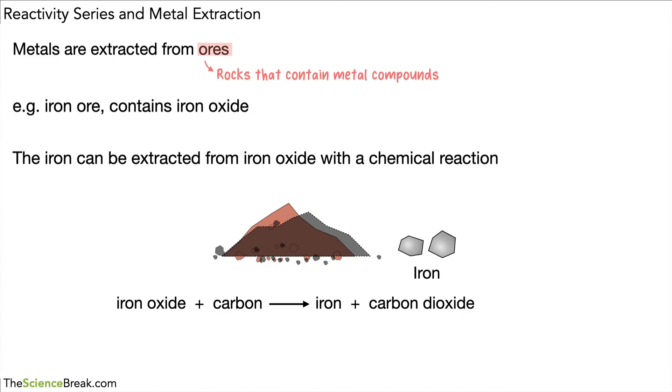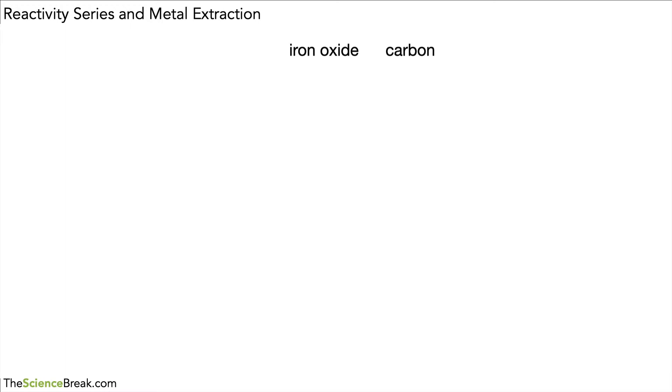So we can just have a quick look to see how that actually happens. We've got our iron oxide and our carbon but because the carbon is more reactive than the iron, what it does is it takes the oxide away from the iron oxide and makes carbon dioxide.